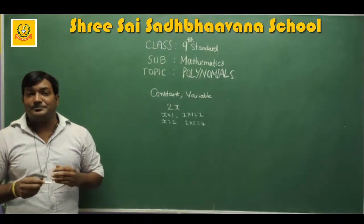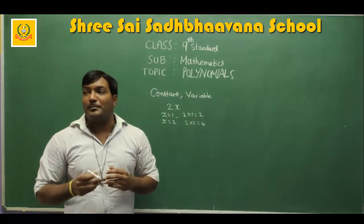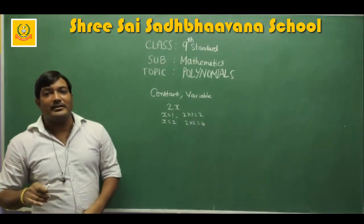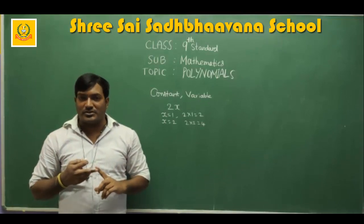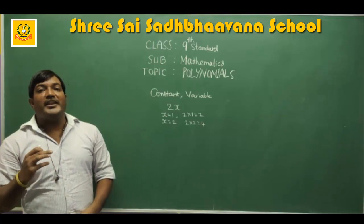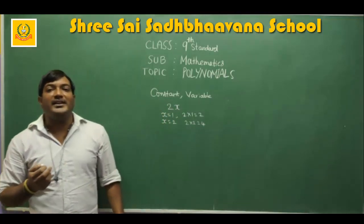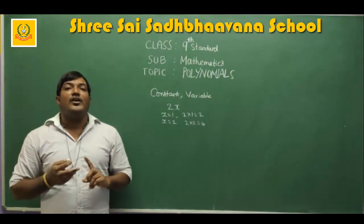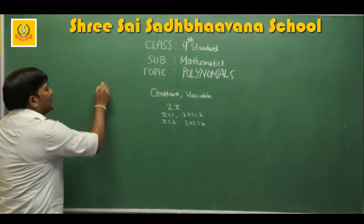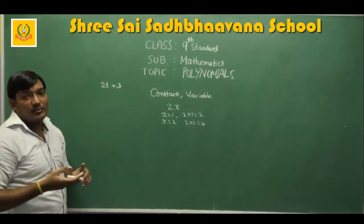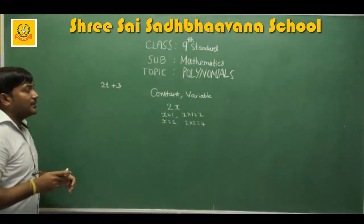Then we consider the concept called polynomials. Before going to that concept, you should understand that a polynomial is an algebraic expression. A polynomial is an algebraic expression which has constants and variables in it. For example, 2t + 3 — here t is the variable and 2 and 3 are the constants.